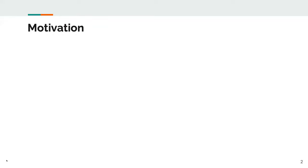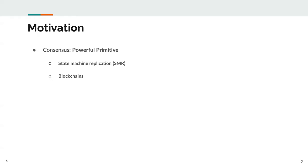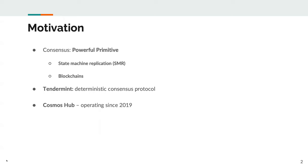Let me explain why we decided to take a closer look at the Tendermint consensus protocol. Consensus is one of the most fundamental primitives of distributed computing — it allows processes to decide on a common value. There are two traditional scenarios: state machine replication, where all servers agree on the next command to execute, and blockchain, where all parties agree on the next block of transactions, thus building a chain of blocks. Tendermint is a deterministic consensus protocol, and a noteworthy deployment called Cosmos Hub has been in continuous operation since 2019. While successful in practice, Tendermint does not have a definitive description in the literature — this is what we are trying to fix with our paper.